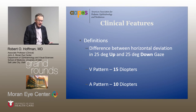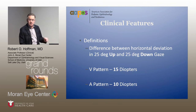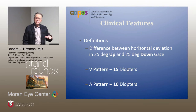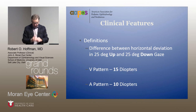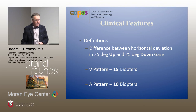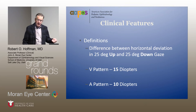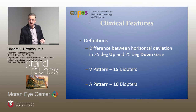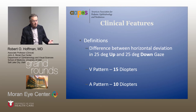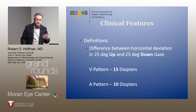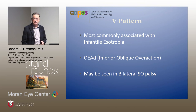For definitions of A and V patterns: if you measure horizontal strabismus 25 degrees up by putting the chin down, 25 degrees down by lifting the chin up, and you have a 15 diopter disparity, that's a V pattern — you have to have that much disparity to diagnose it. For an A pattern, 10 diopters of disparity is required. That is just what's used by convention; there's no magic to that.